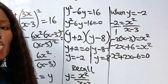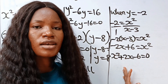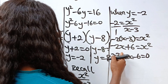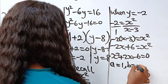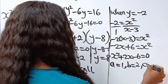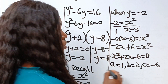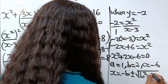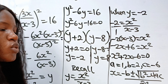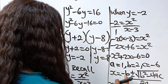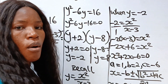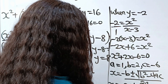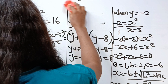Now let's find x using the quadratic formula. Here a equals 1, b equals 2, c equals minus 6. So x equals minus b plus or minus square root of b squared minus 4ac, all divided by 2a — giving x equals minus 2 plus or minus square root of 4 minus 4 times 1 times minus 6, divided by 2.